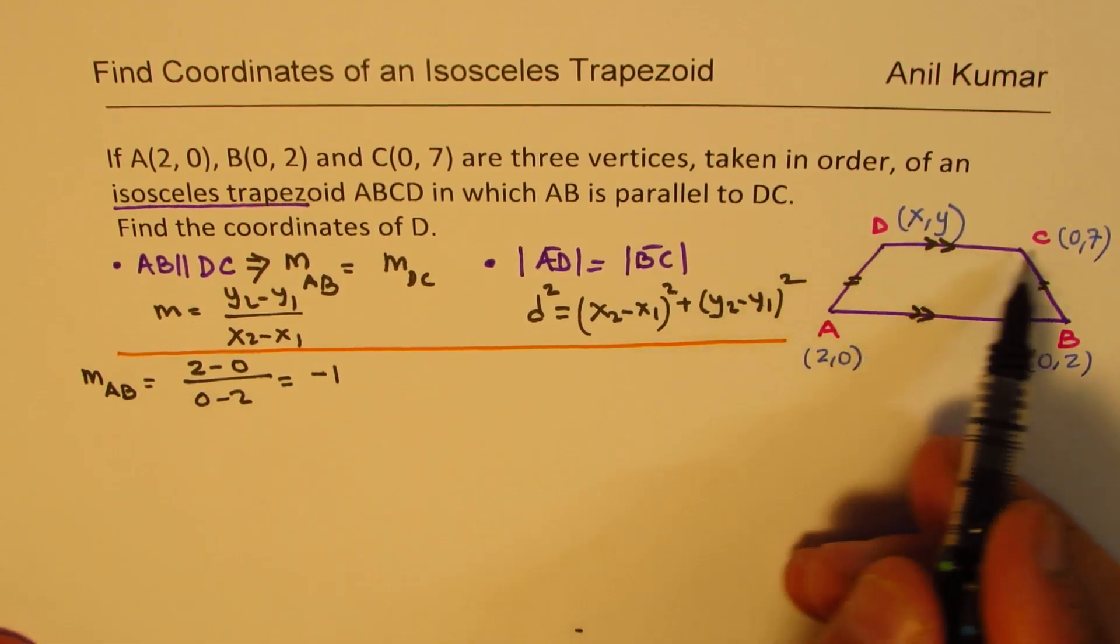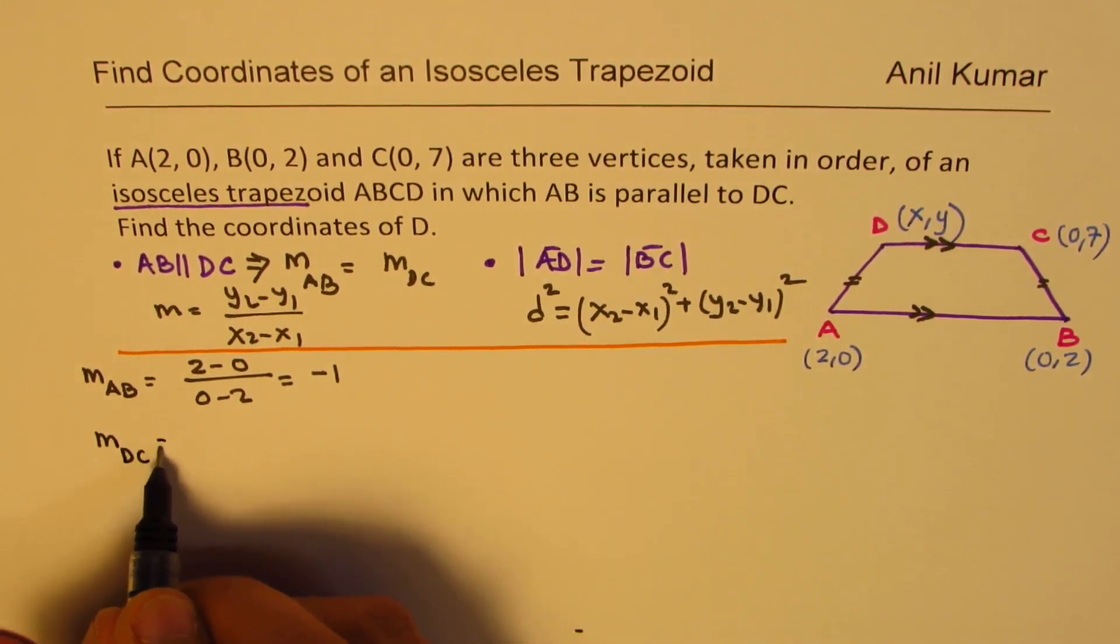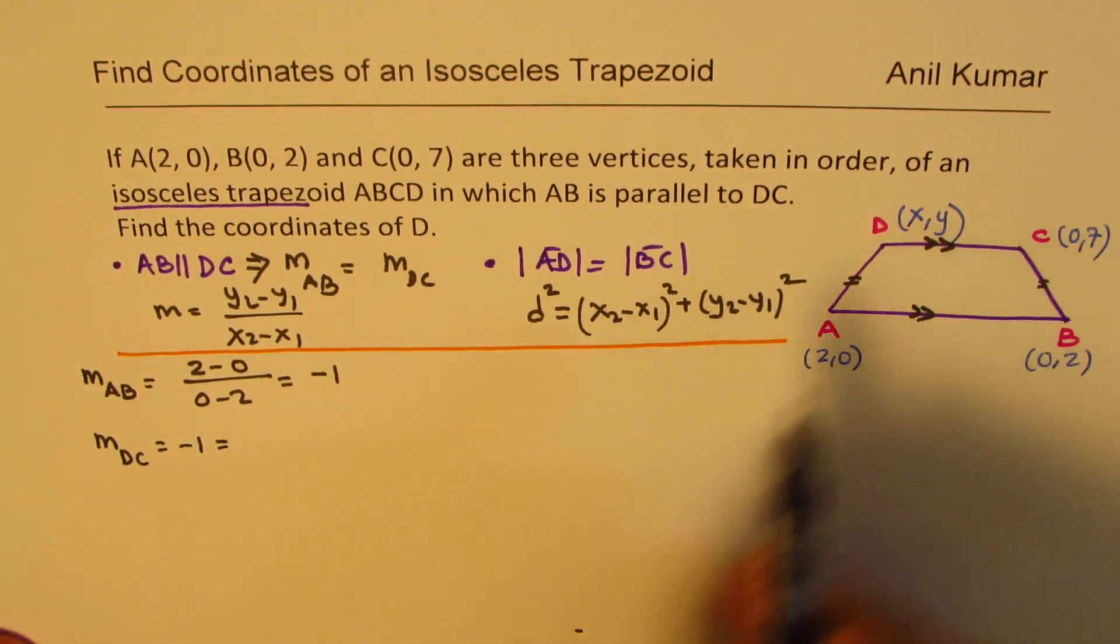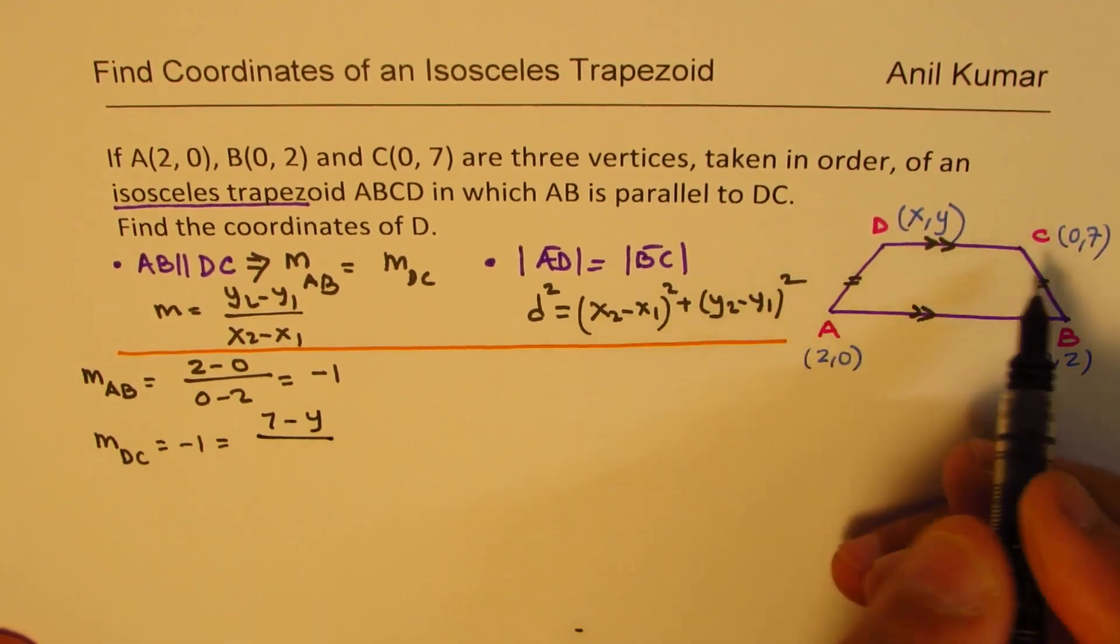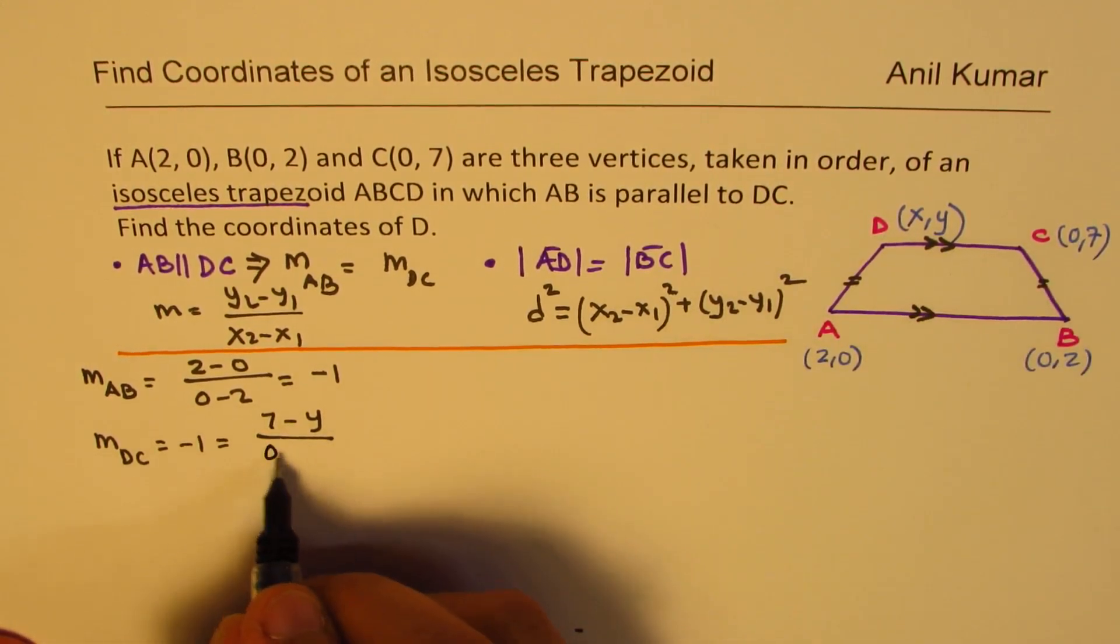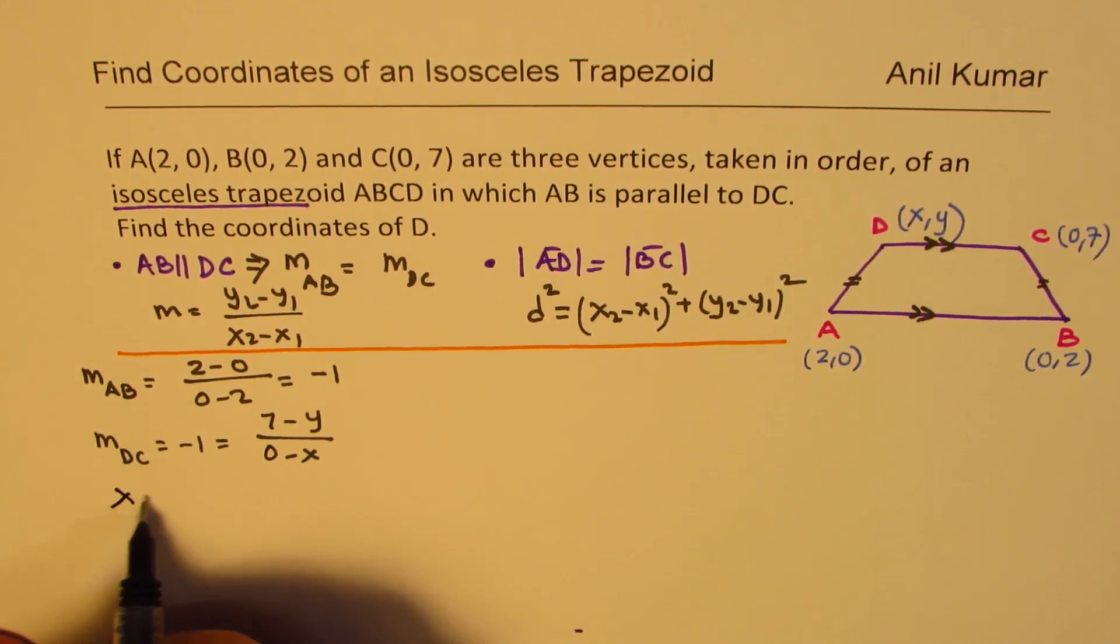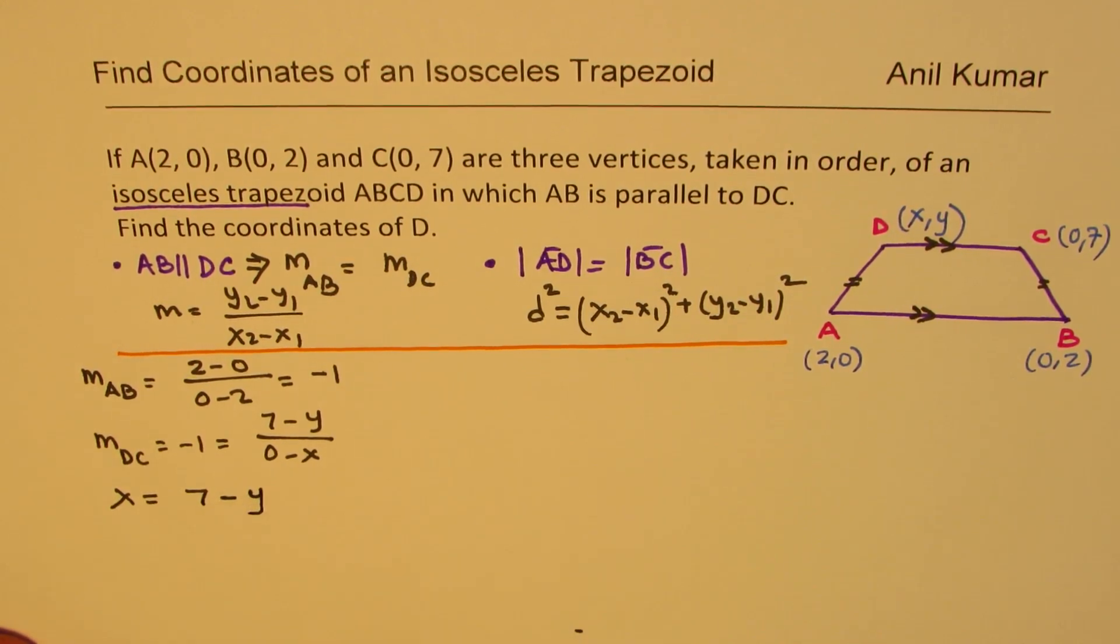Now, DC should also be same, right? So slope of DC should also be minus 1. But you can also calculate by finding difference of Y values, which is 7 minus Y, over difference in X values, 0 minus X. So cross multiply, you get X equals to 7 minus Y. So we get one equation here.